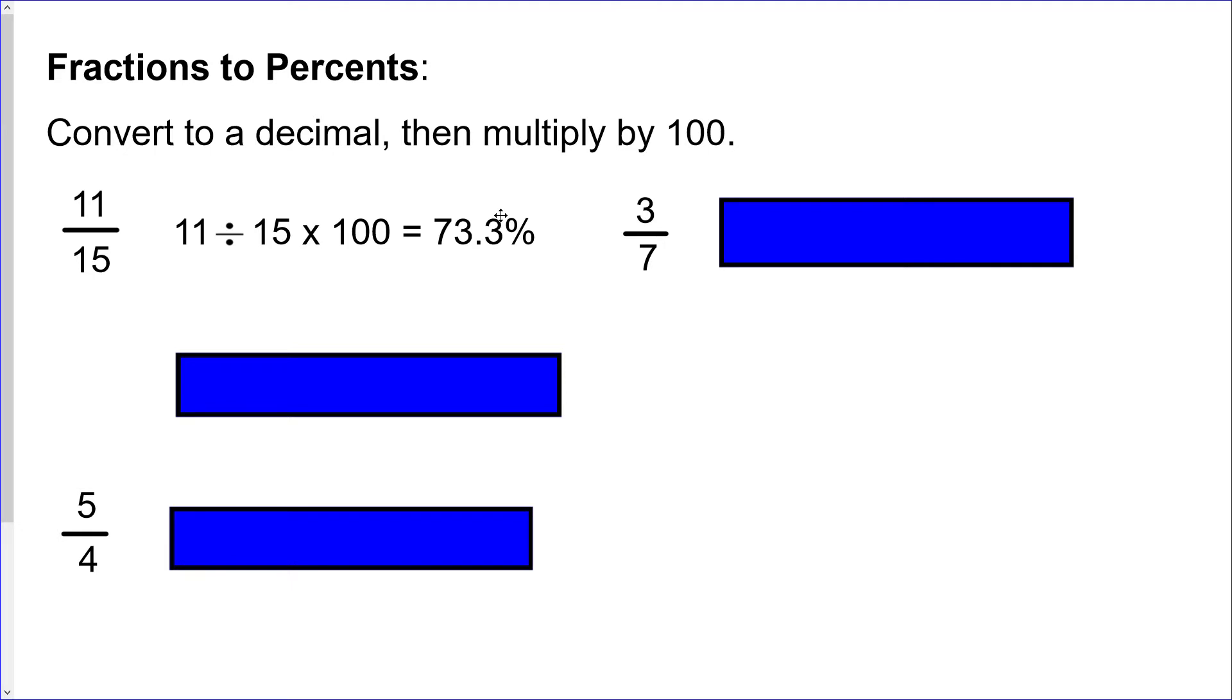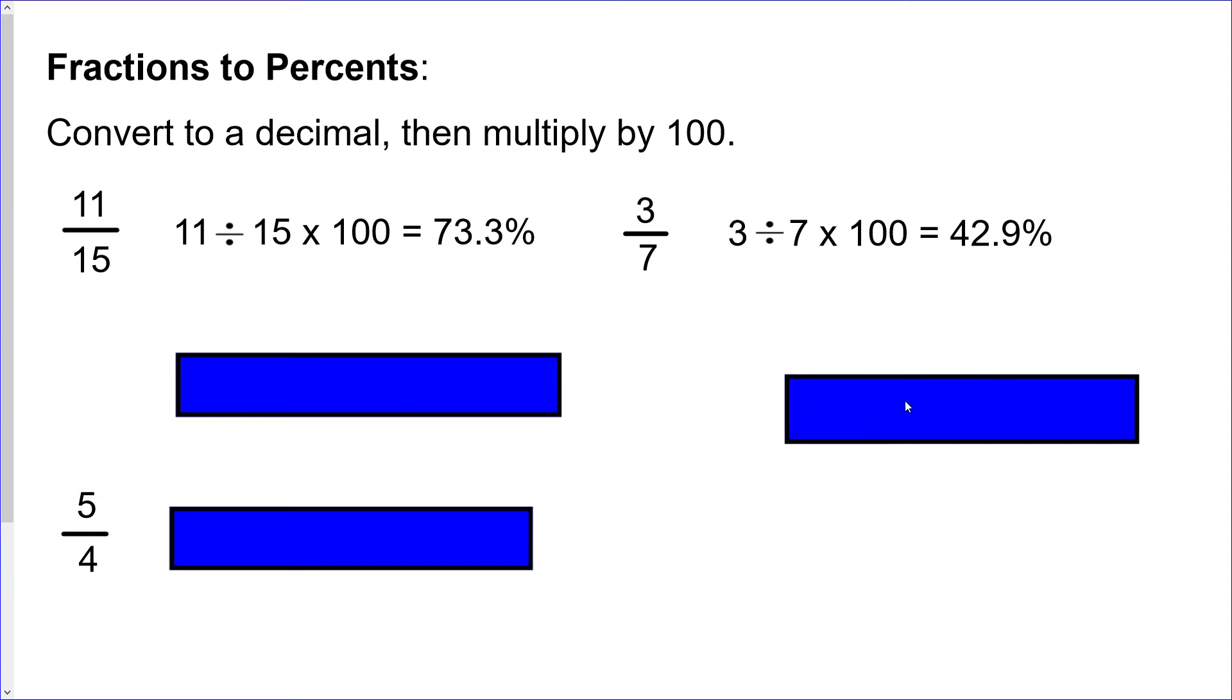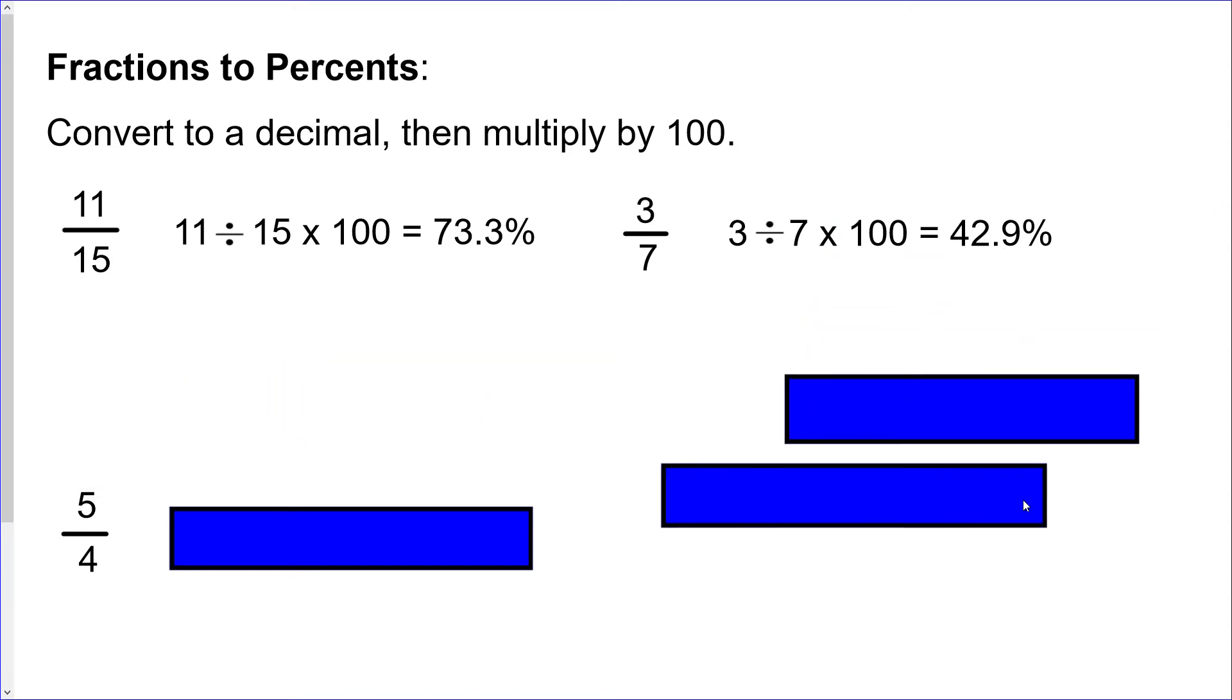Second one: so 3 divided by 7 will equal something weird, and then multiply that by 100 and you would end up with 42.9 percent. Again, that's probably rounded. Now please take a moment and try out the last one and see how you do. Pause the video, give it a go.